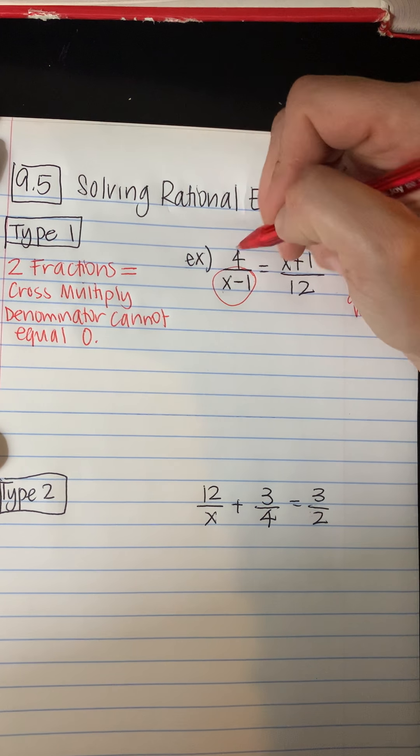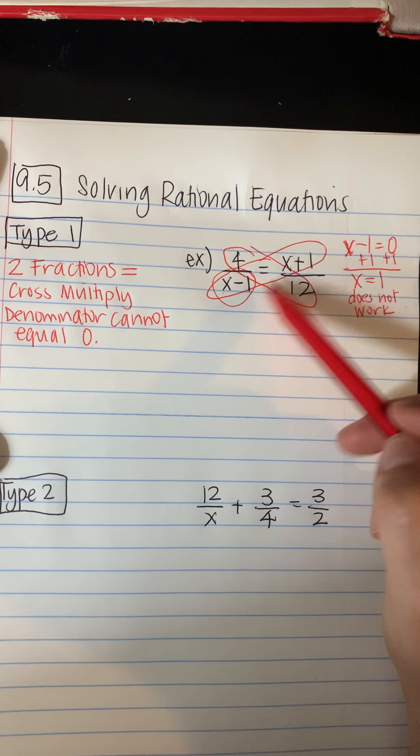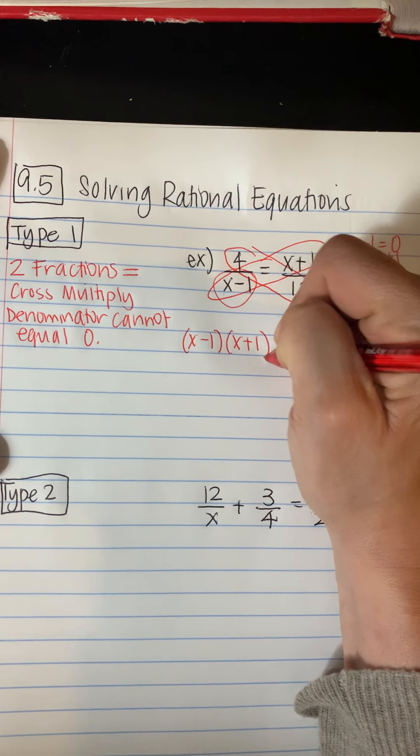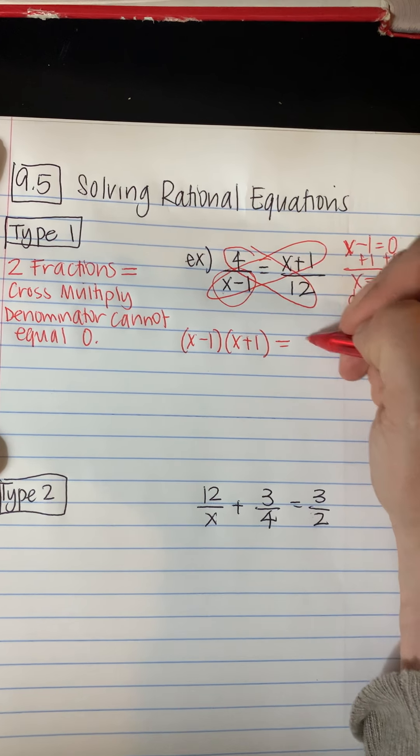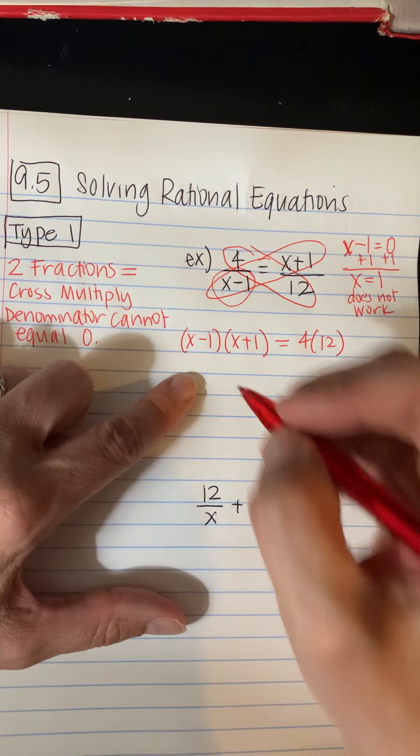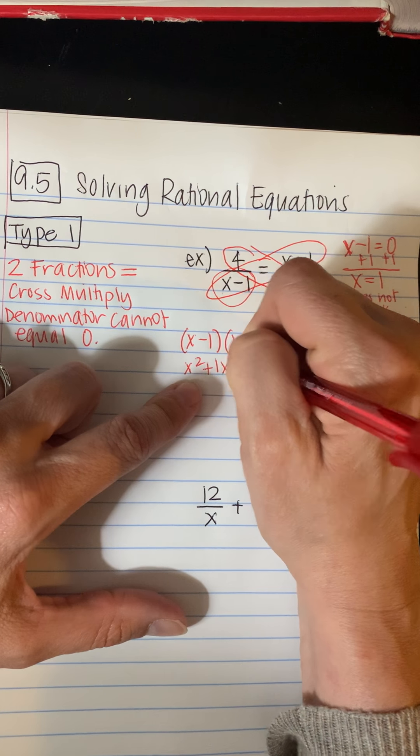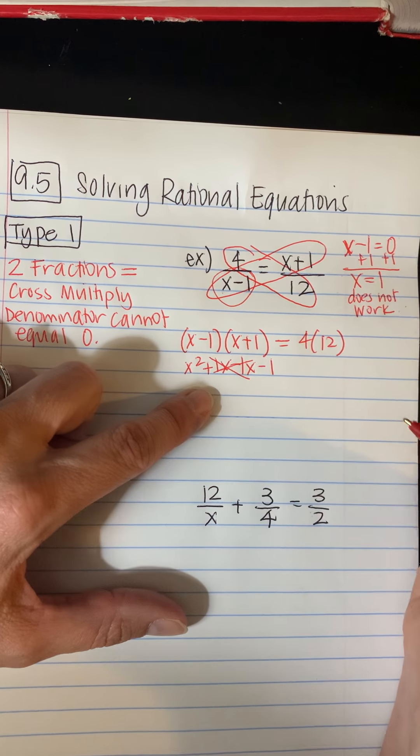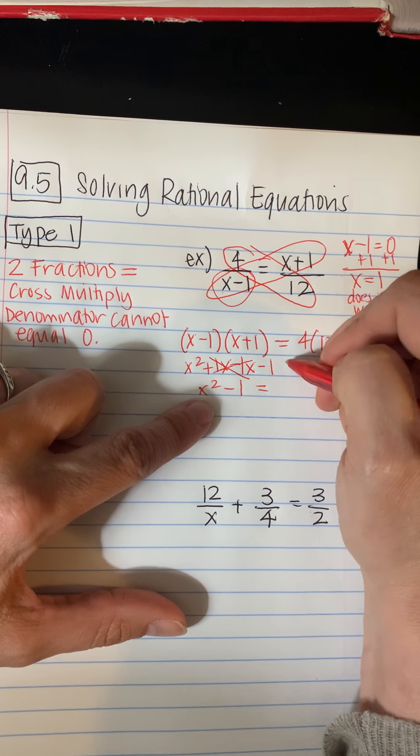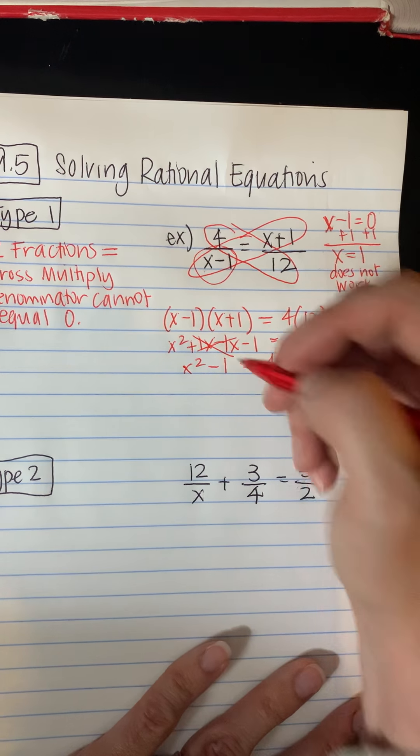But what we're going to do is we're going to cross multiply here. So I'm going to multiply these two together, which is more work than we probably want to do, but this will be okay. Multiplying those two and then four times 12. So we'll do first outer inner last here, FOIL. But the good news is they're conjugates. So these two will cancel.